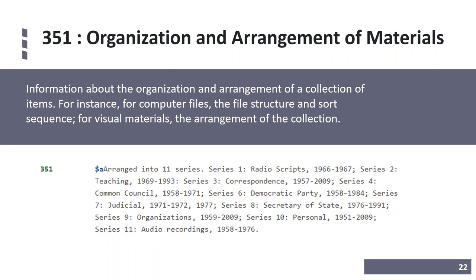Field 351 is the organization and arrangement of materials — information about how a collection of items is organized. Archival collections tend to have more components than a monograph or series of books and are organized in different ways. It can be really helpful to both researchers and reference staff to know how materials are arranged so an entire collection doesn't have to be fetched if only part is needed. For instance, in the example I can see there are radio scripts, so if I'm a researcher interested in studying those specifically, I know exactly where to look.